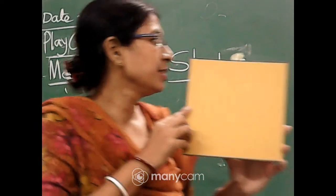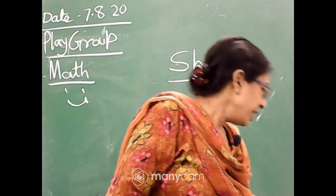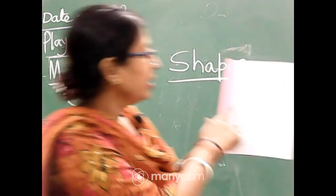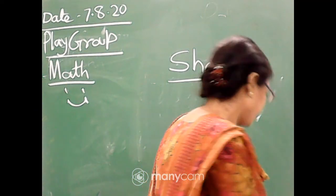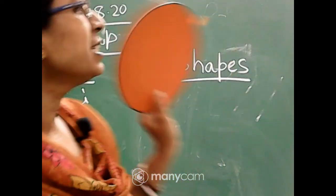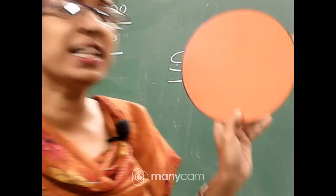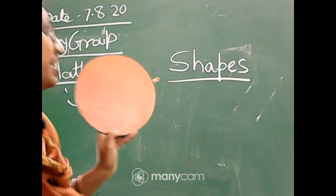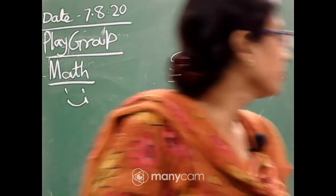Next, circle. This is circle — this is just a round shape. You see the sun — it is just like a circle. It is circle.